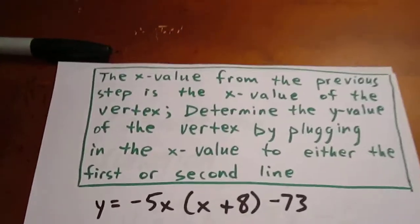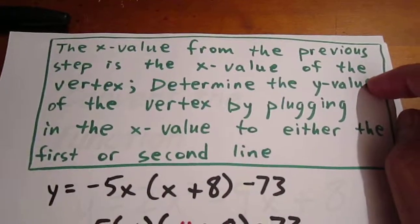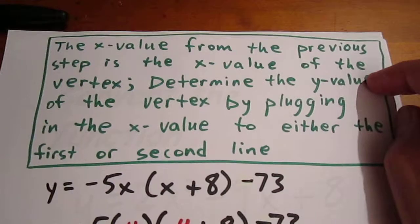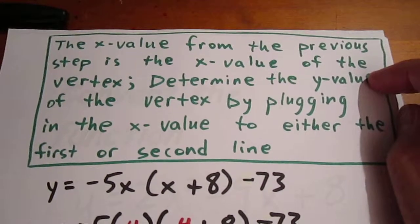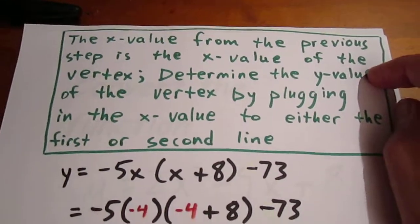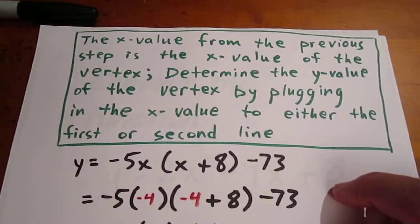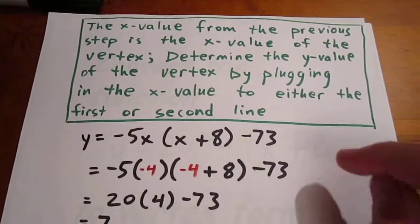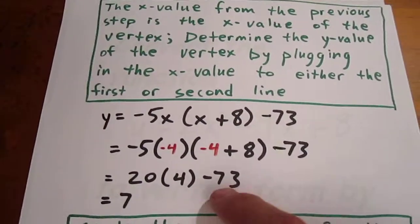We can then determine the y value of the vertex by plugging in the x value to either the first or second line. We know the x value of the vertex is negative 4, so we know the y value of the vertex